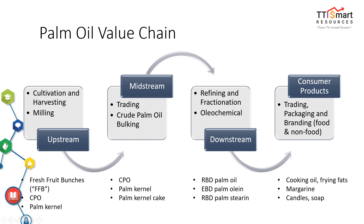If you wish to learn more about the process of cultivating oil palm to producing palm oil, please refer to the link in the video description. To determine whether a company is in upstream, downstream, or diversified, the most effective way so far is to check their operating statistics and management discussion and analysis in their annual report.